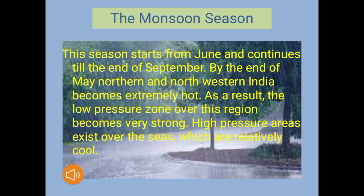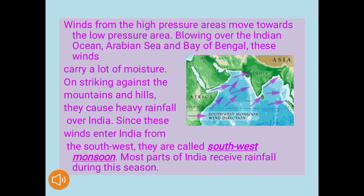Now about the monsoon season. This season starts from June and continues till the end of September. By the end of May, northern and northwestern India becomes extremely hot. As a result, a strong low-pressure zone forms over this region. High-pressure areas exist over the seas, which are relatively cold. The winds from the high-pressure areas move towards the low-pressure area, blowing over the Indian Ocean, Arabian Sea, and the Bay of Bengal. These winds carry a lot of moisture, and on striking against the mountains and hills, they cause heavy rainfall over India. Since these winds enter India from the southwest, they are called the southwest monsoon.